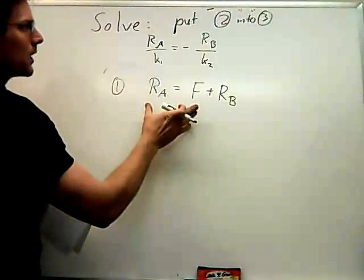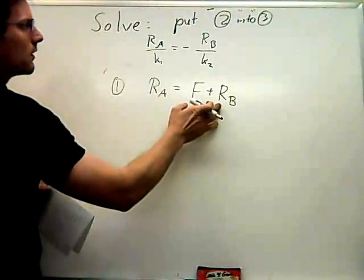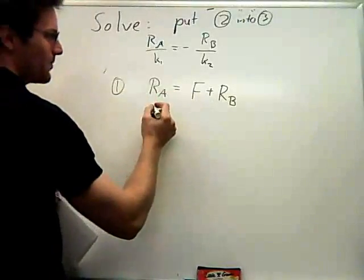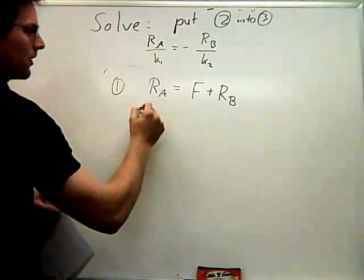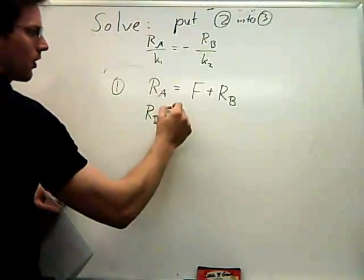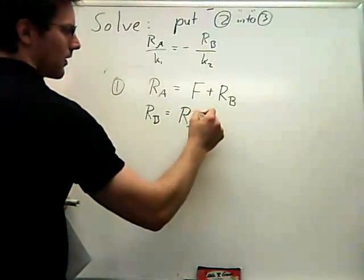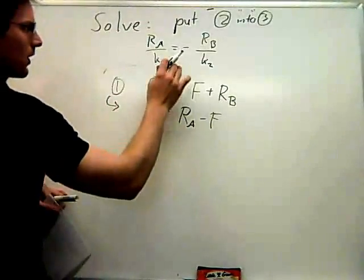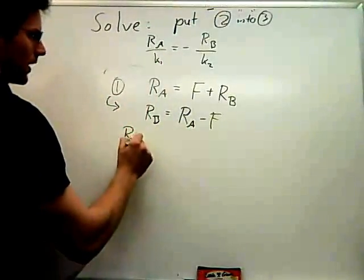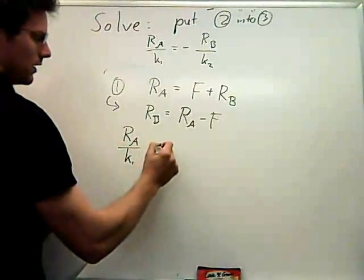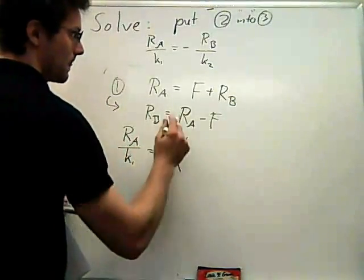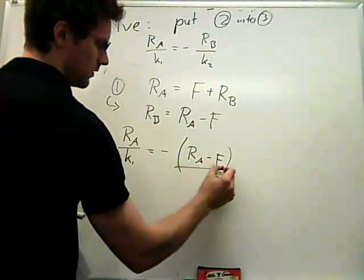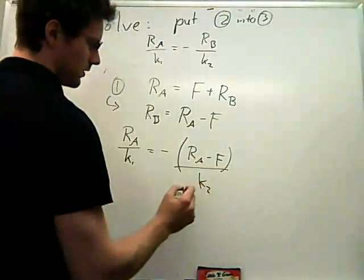So RB is RA minus F, and then I'll take this RB and plug it into our new equation here. So RA over K1 is equal to negative RB, which is now RA minus F divided by K2.